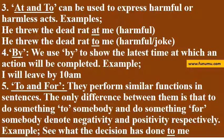4. By — we use by to show the latest time at which an action will be completed. Example: I will leave by 10 a.m. 5. To and for perform similar functions in sentences. The only difference is that to do something to somebody and to do something for somebody denote negativity and positivity respectively. Example: See what the decision has done to me.